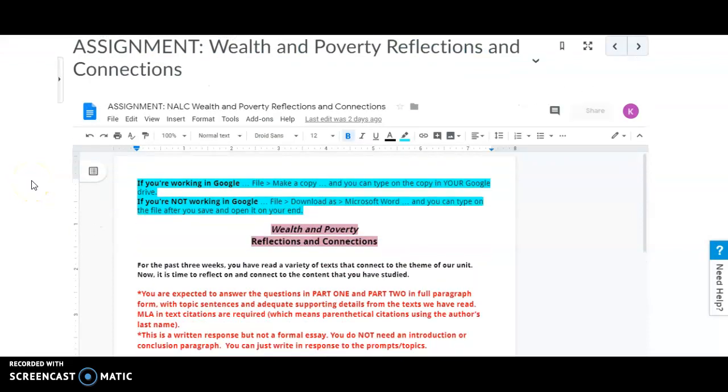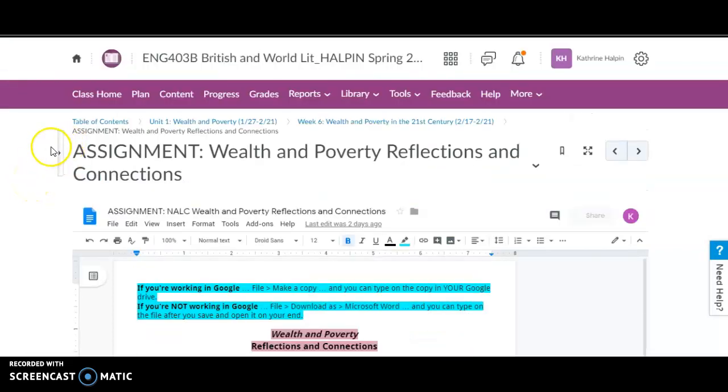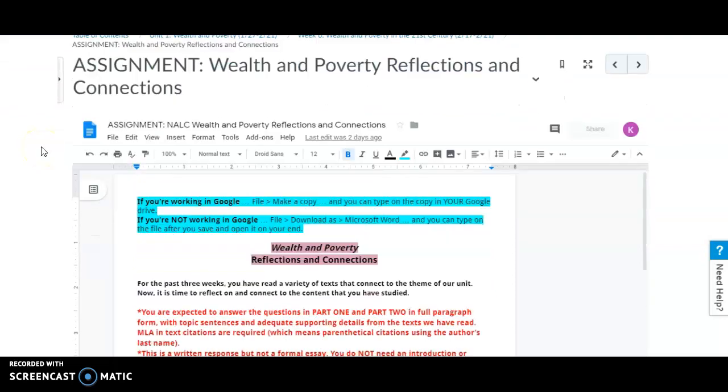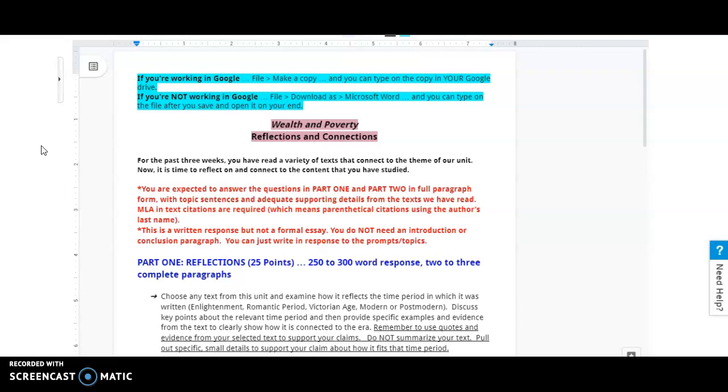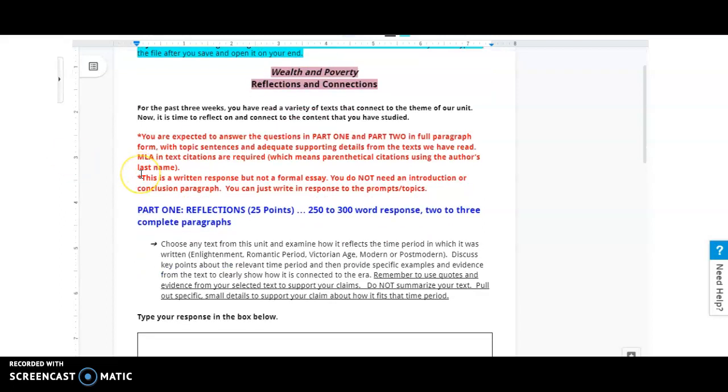Here's the explanation for the 6.1 assignment, the Wealth and Poverty Reflections and Connections. For the past three weeks, you've read a variety of texts that connect to the theme of our unit. Now it is time to reflect on and connect to the content you have studied.